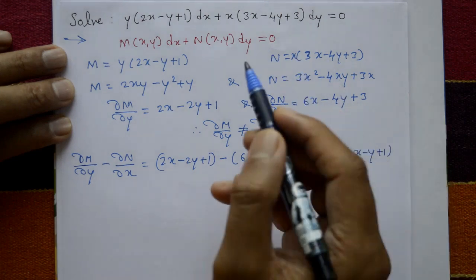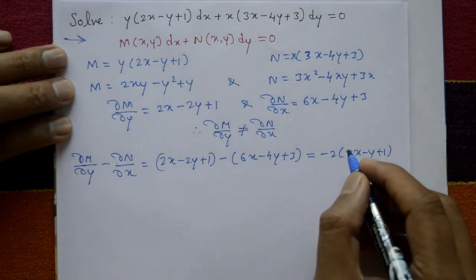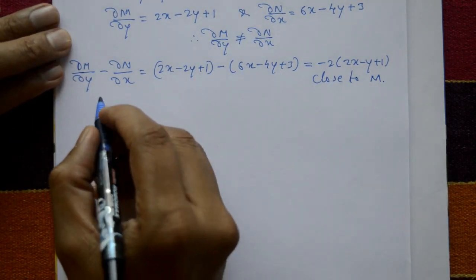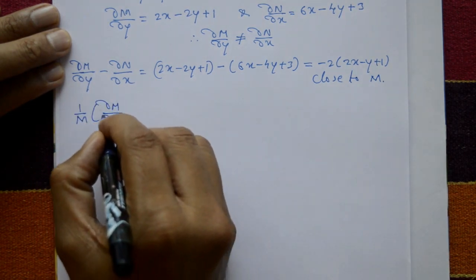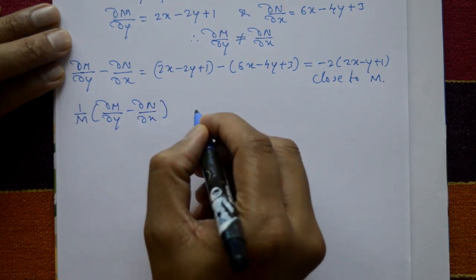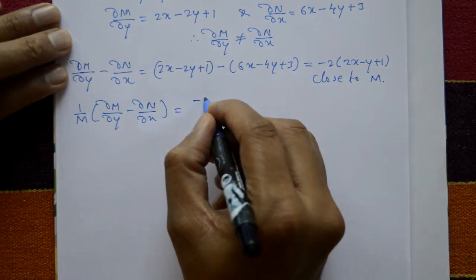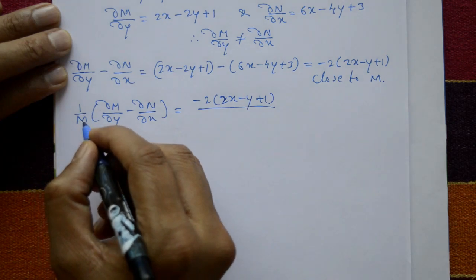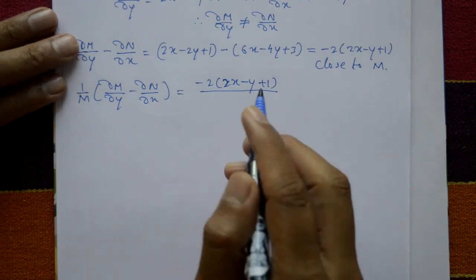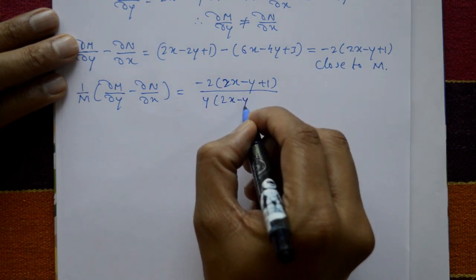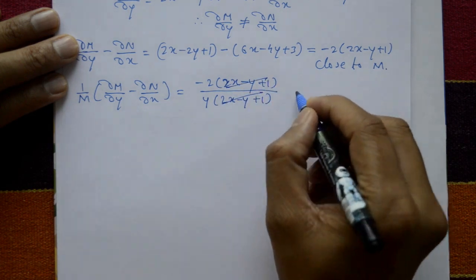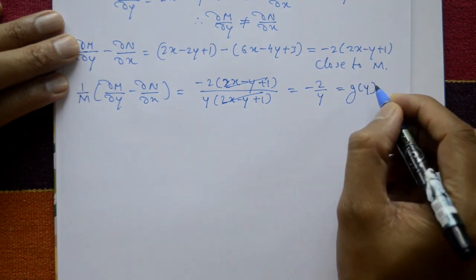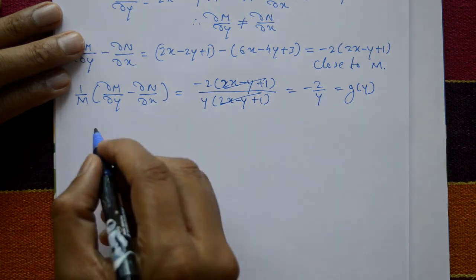Since (∂M/∂y - ∂N/∂x) = -2(2x - y + 1), dividing by M = y(2x - y + 1) gives: (1/M)(∂M/∂y - ∂N/∂x) = -2/y. This is a function of y only, so g(y) = -2/y.